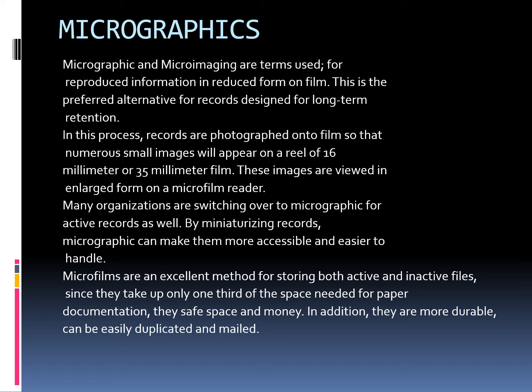Micrographics is another form of record management system. Micrographic and microimaging are terms used for reproduced information in reduced form on film, and this is the preferred alternative for records designed for long-term retention. Records are photographed onto film so that numerous small images appear on a reel of 16mm or 35mm film, which are then viewed in enlarged form on a microfilm reader. Many organizations are switching over to micrographics for active records as well. By miniaturizing records, micrographics makes them more accessible and easier to handle. Microfilms take up only one third of the space needed for paper documentation, saving space and money. In addition, they are more durable, can be easily duplicated and mailed.